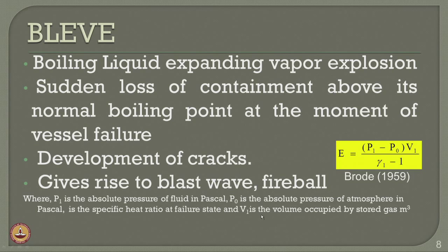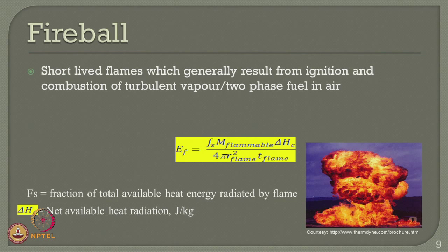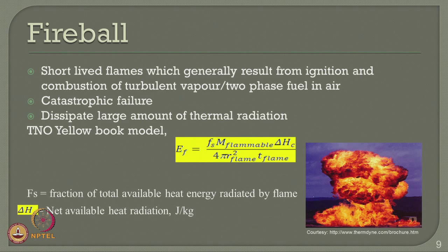The other consequence is the fireball — short-lived flames resulting from ignition and combustion of turbulent vapor or two-phase fuel in air, causing catastrophic failure and dissipating large amounts of thermal radiation. According to the TNO Yellow Book model, the energy released by a fireball is a function of Fs (fraction of total available heat energy radiated by the flame) and delta-Hc (net available heat radiation in joules per kg). In this equation, d equals 6.48 m to the power of 0.325, T-d equals 0.825 m to the power of 0.26, and height h equals 0.75d.